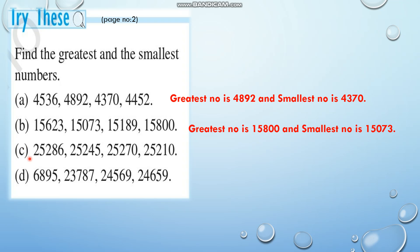Now the C part question: 25,286; 25,245; 25,270; and 25,210. Here all the numbers have the first three digits the same, so look at the fourth digit and compare: 8, 4, 7, and 1.